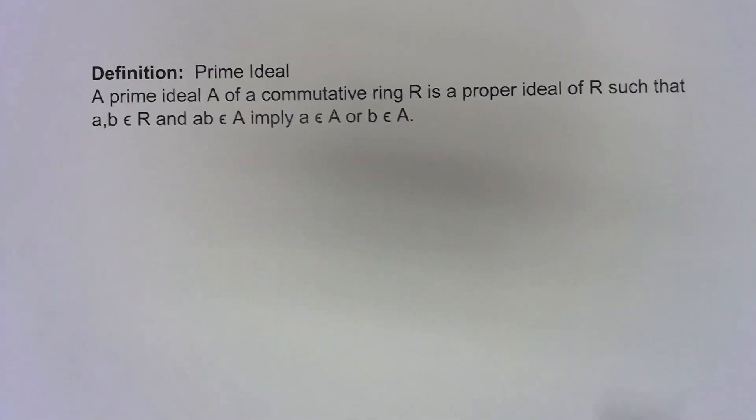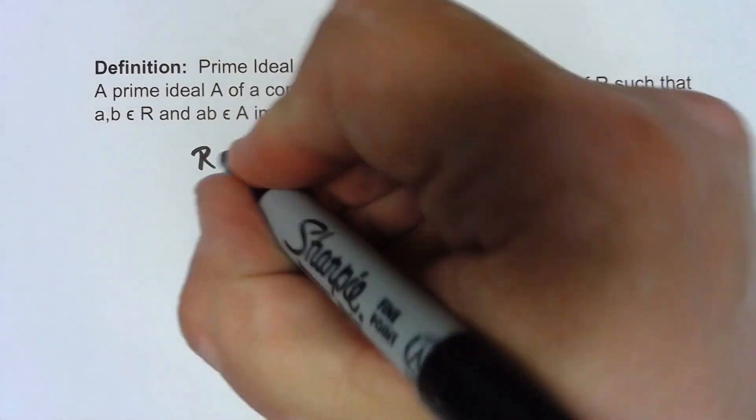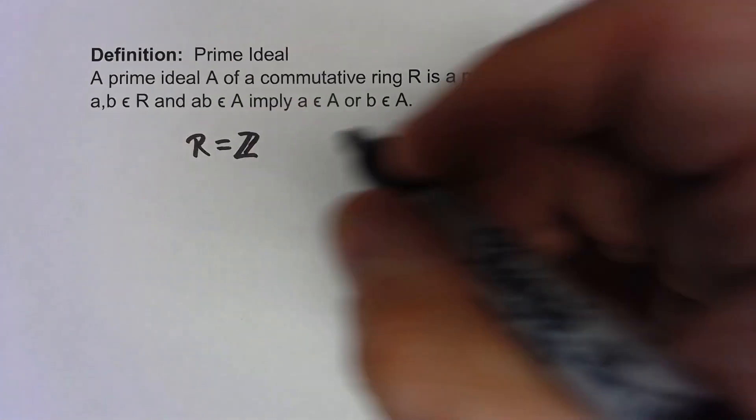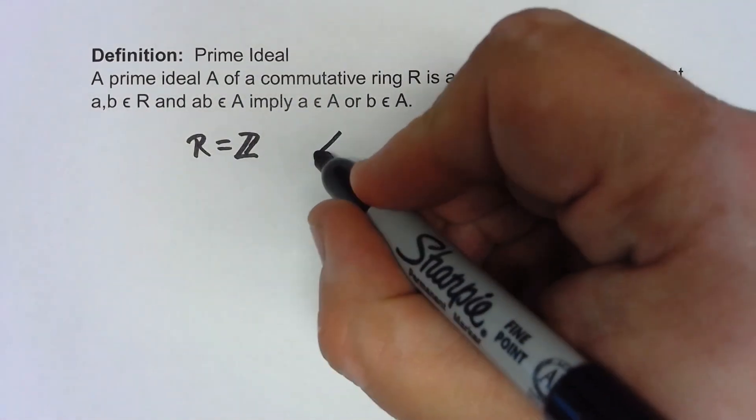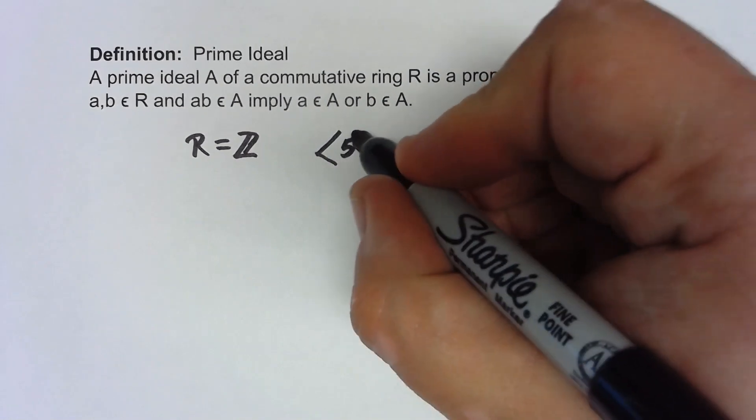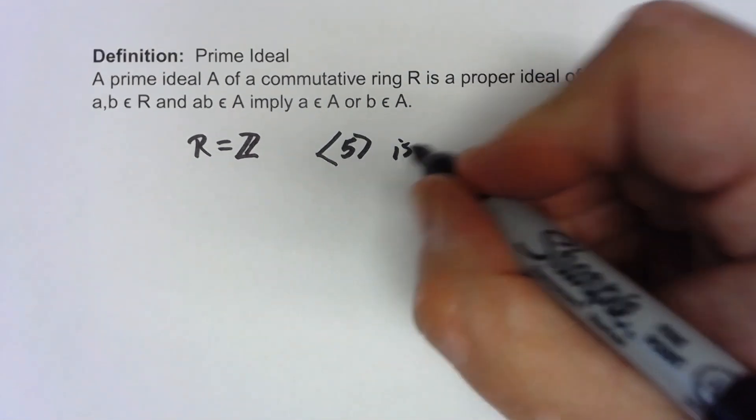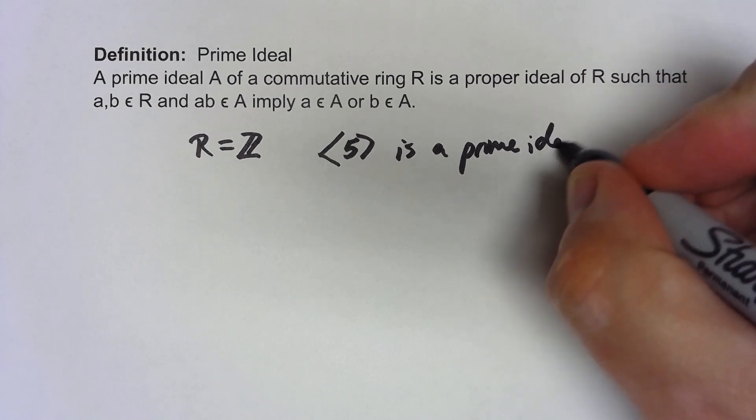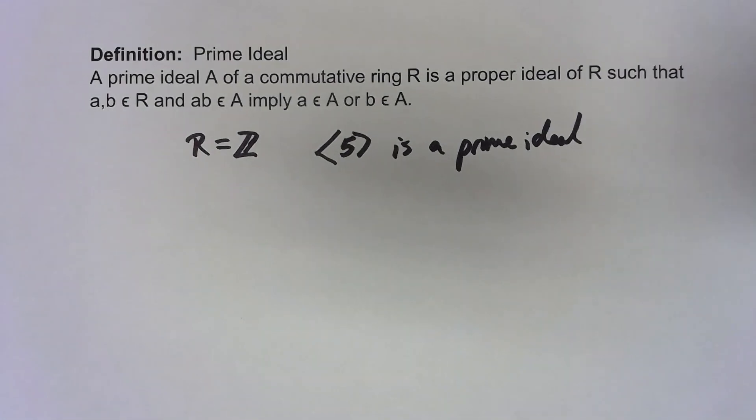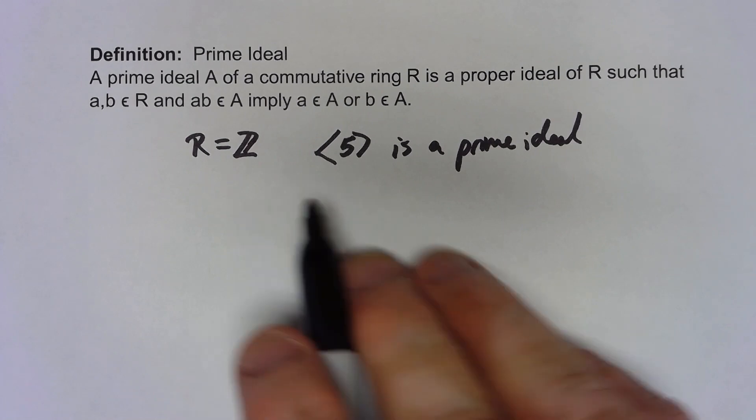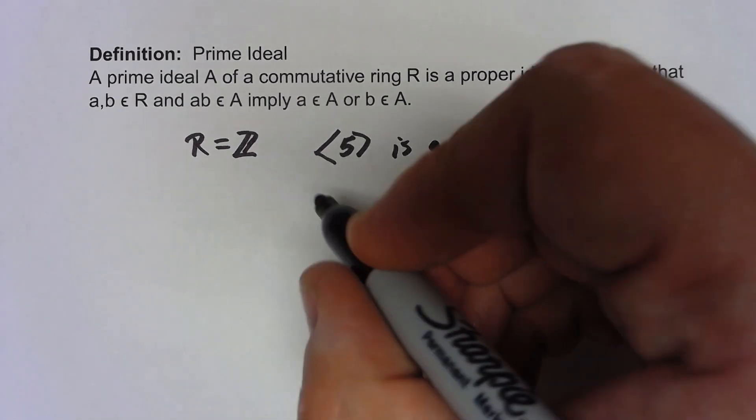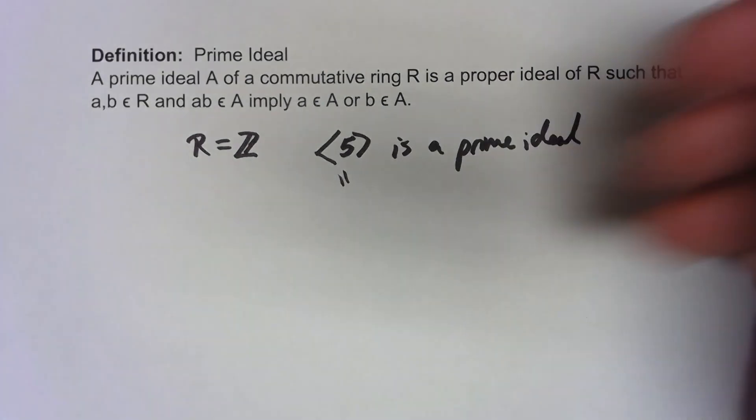Let's look at an example. Let's say I've got my commutative ring R, our standard example, the integers. I'm going to say that the ideal generated by 5 is a prime ideal. Why is that? Well, remember that the ideal generated by 5 is going to be the set of multiples of 5.